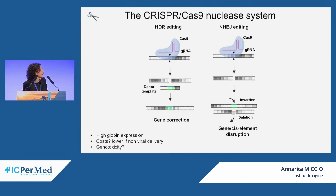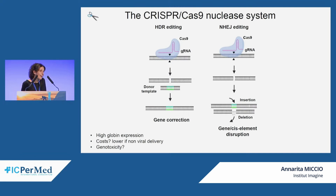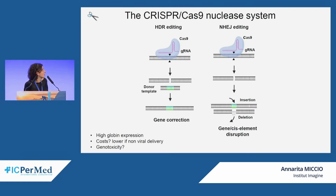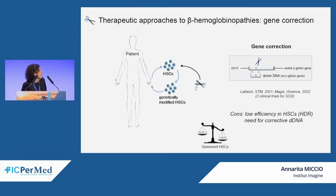Alternatively, the double-strand break can be repaired by the non-homologous end joining pathway, generating small insertions and deletions that can inactivate genes or cis-regulatory elements. The advantages of direct mutation correction include potentially high endogenous globin expression, possibly lower costs since delivery often does not require a viral vector, and more targeted genotoxicity compared to lentiviral vectors — though genotoxicity still needs to be carefully evaluated.